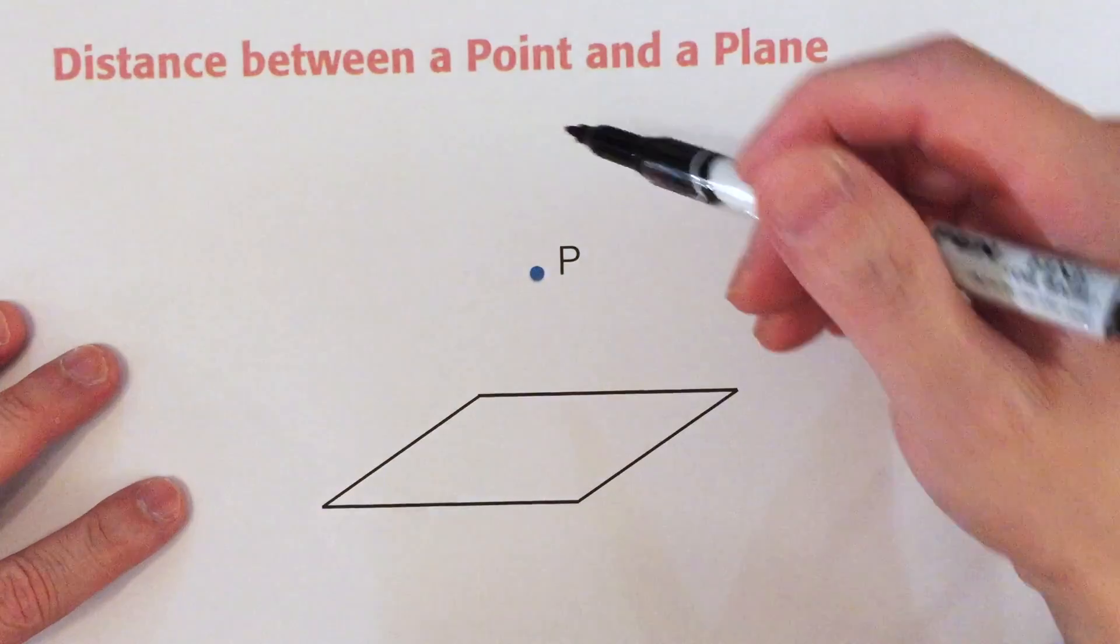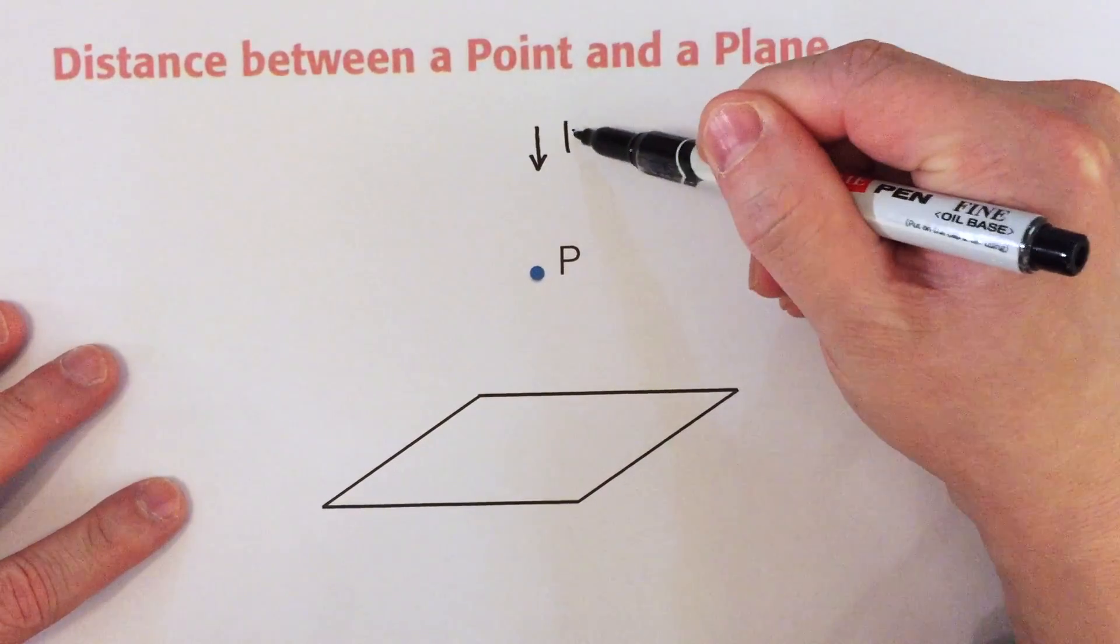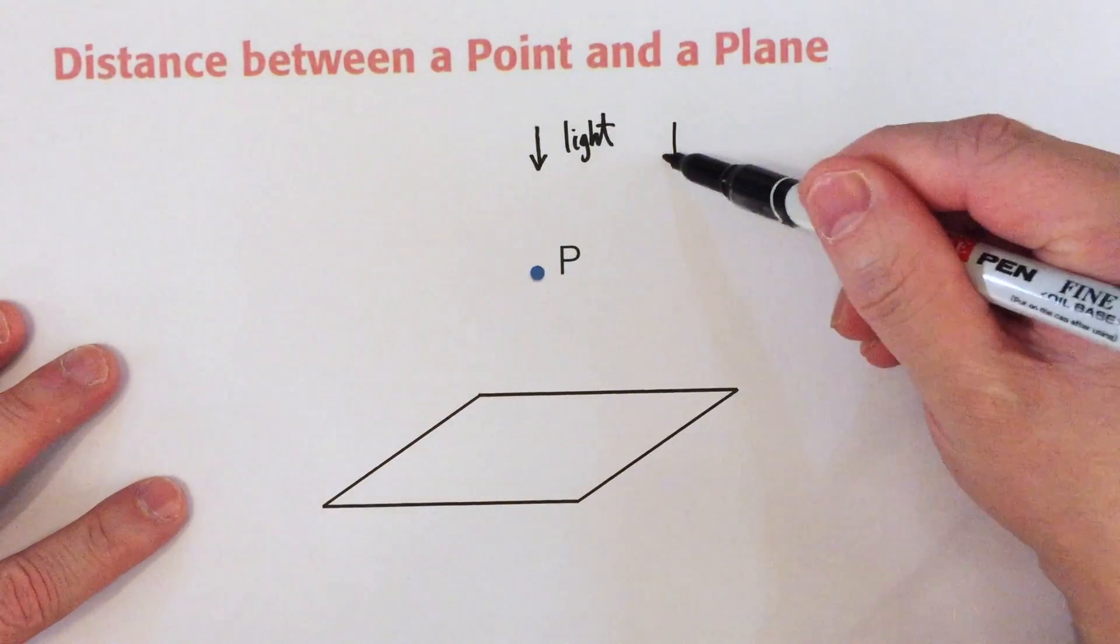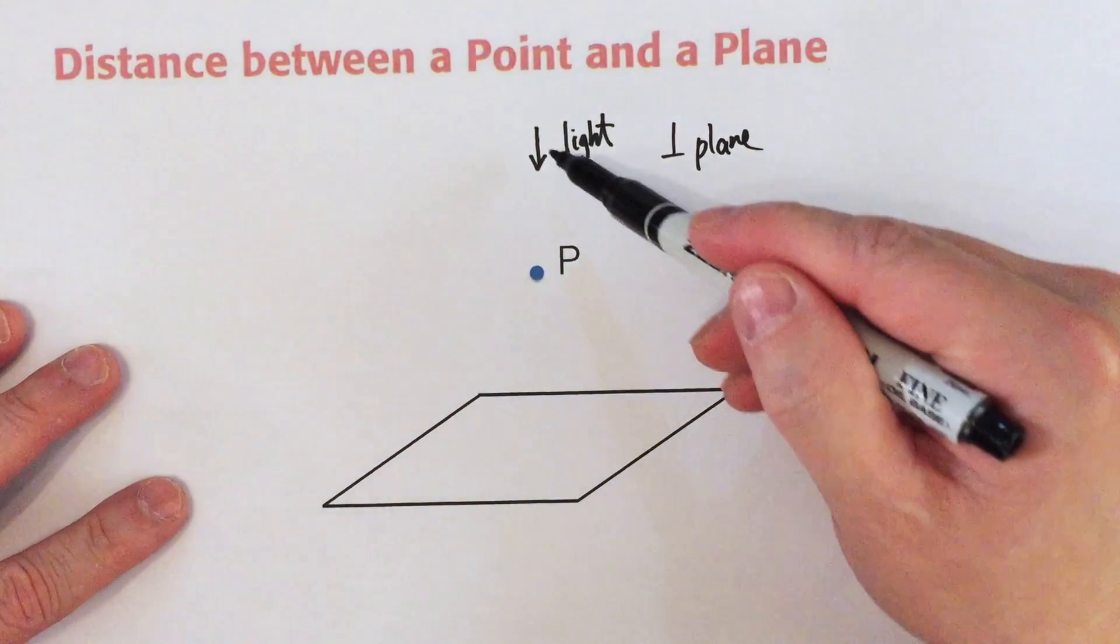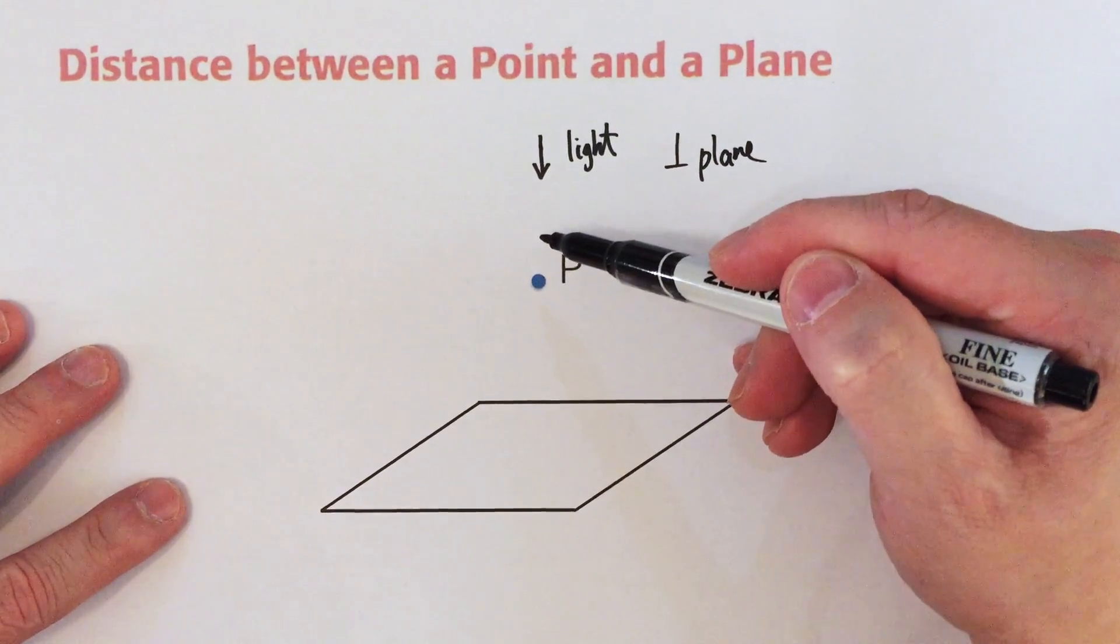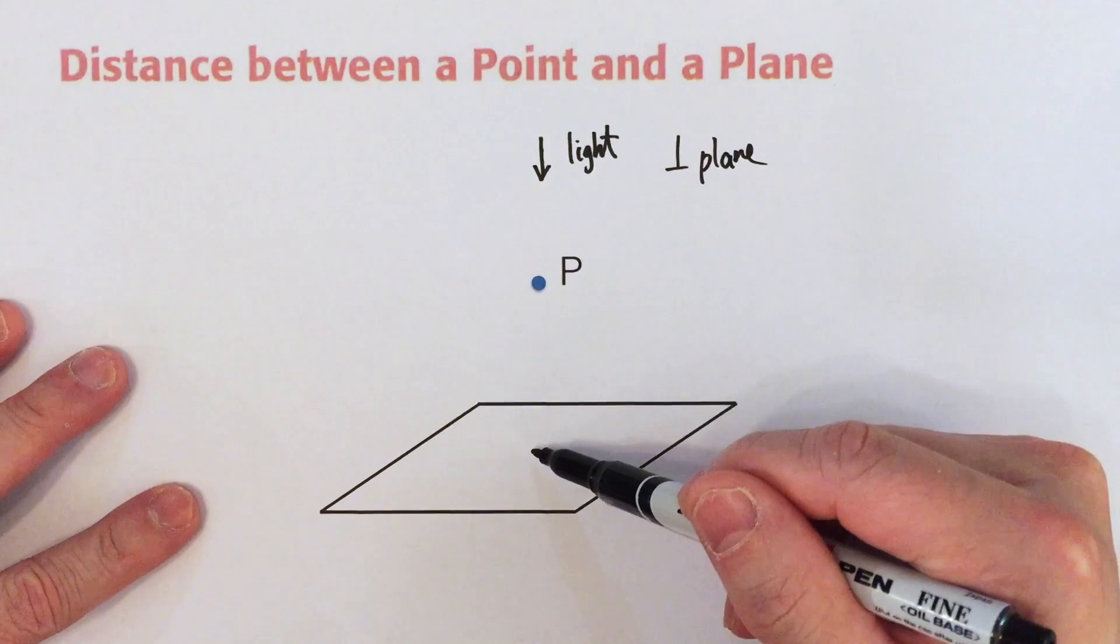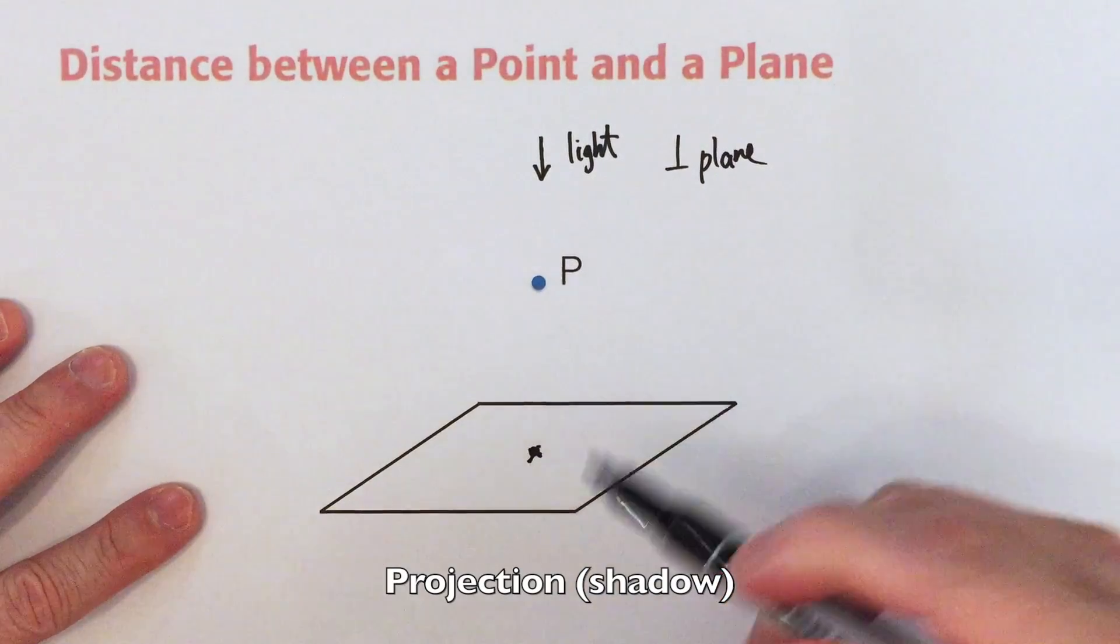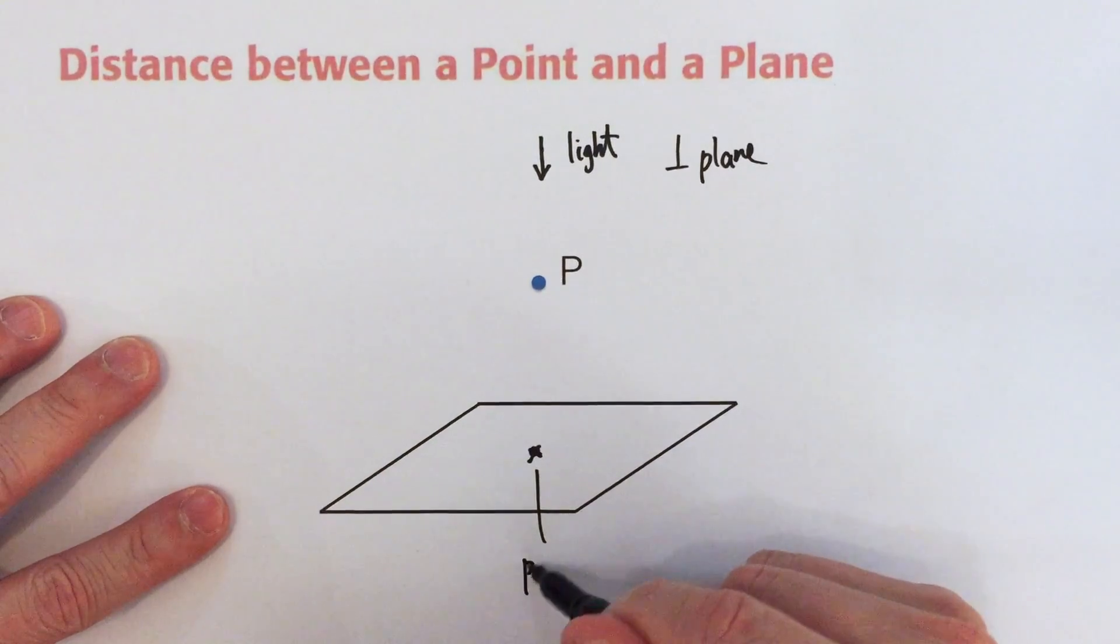So the first step is we have to assume there is some light which is shining perpendicular to the plane we are concerned with. So the direction of the light will be like this, from the top to the bottom. And then this point P will produce a shadow right here. So this is a shadow, or in mathematics we call this a projection.